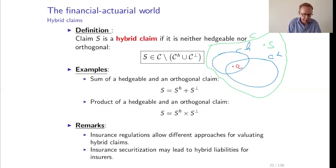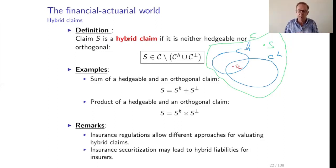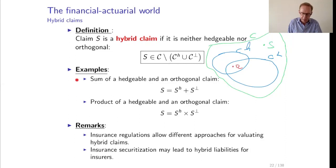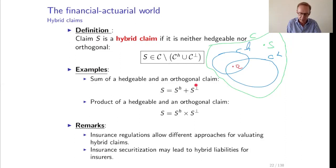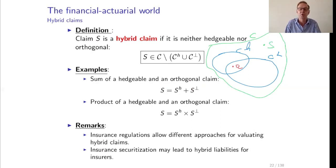These hybrid claims are the interesting ones to price. For hedgeable claims we use financial valuation; for orthogonal claims we use actuarial valuation. For hybrid claims we need a combination of both. If S is the sum of a hedgeable claim S_H and an orthogonal claim, the hedgeable part is clearly S_H. We price S using the financial market price of S_H plus an actuarial principle — for instance the cost of capital principle — for the rest. The Solvency II regulation specifies clearly how to price such sums.